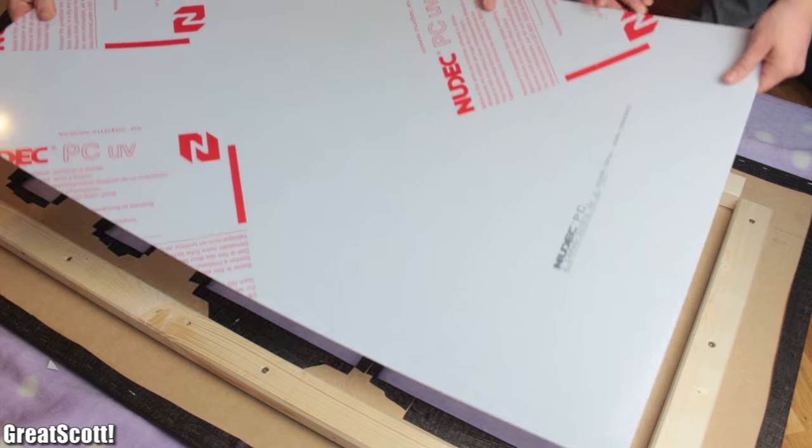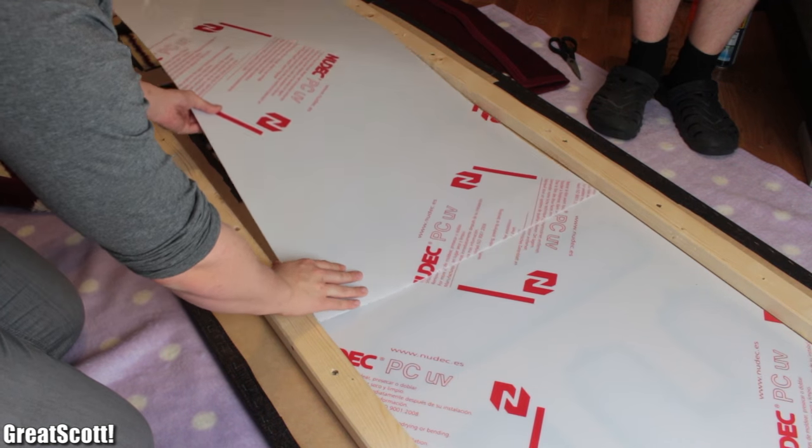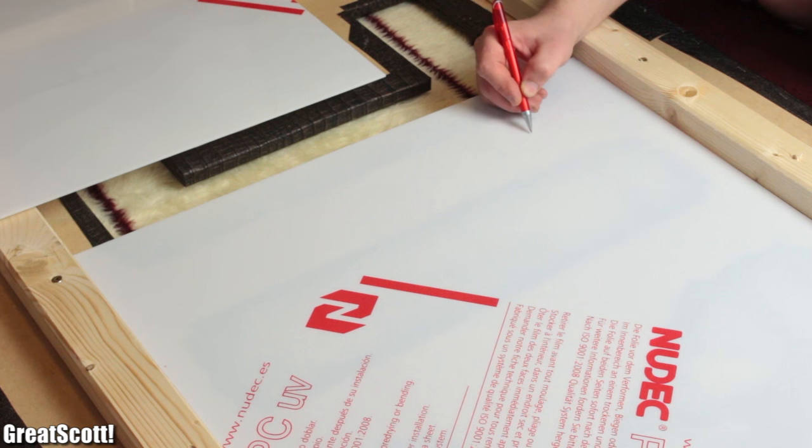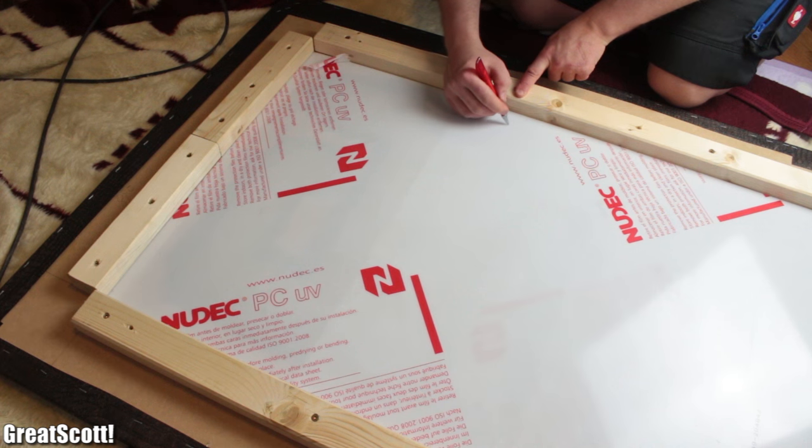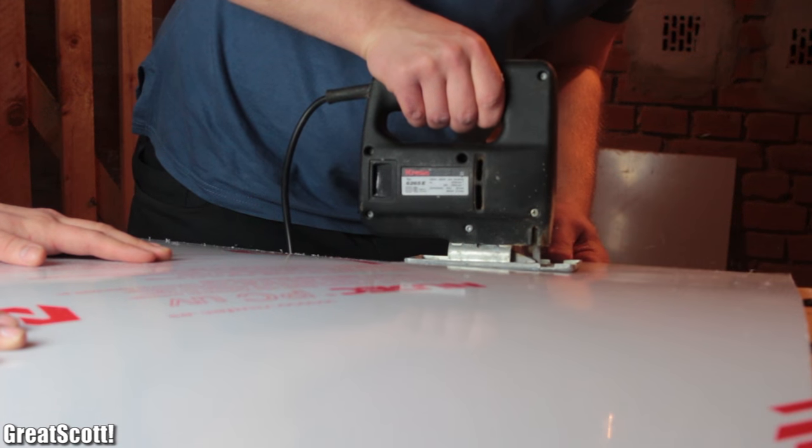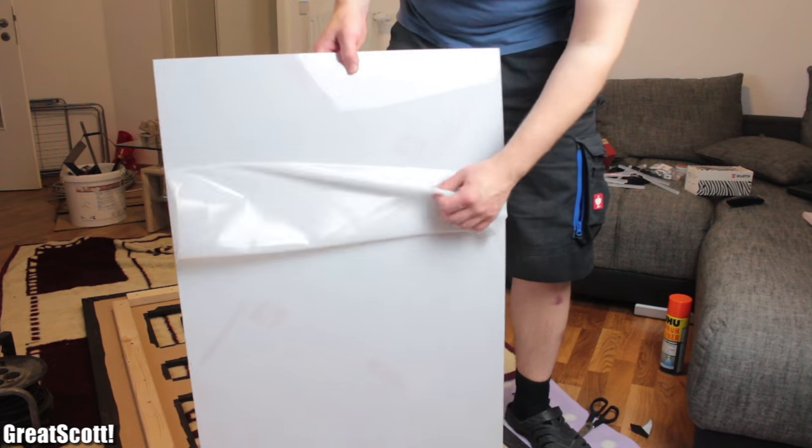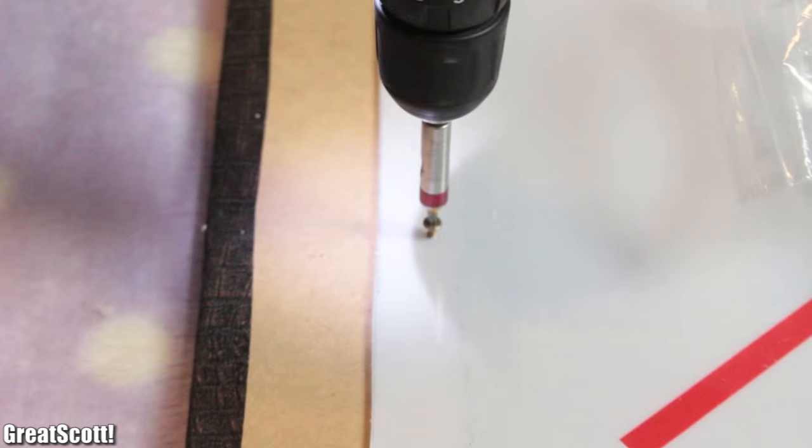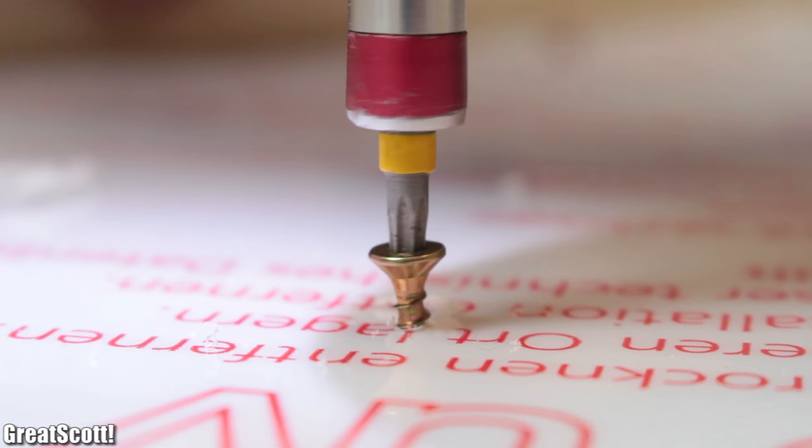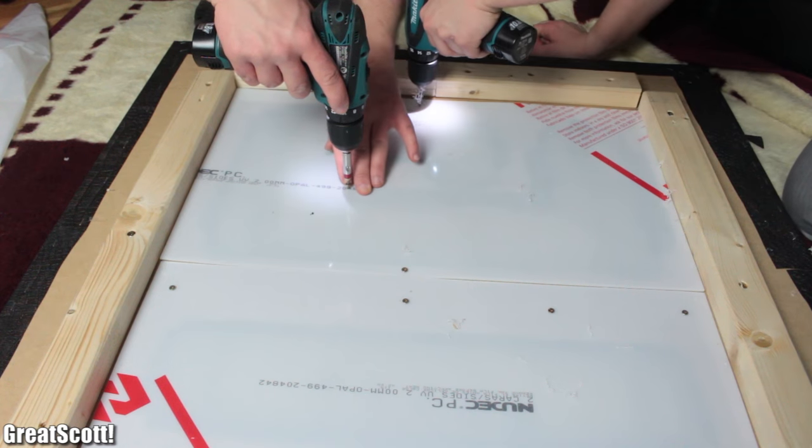Next we laid down the milky white 2 mm thick acrylic pieces and determined where to cut them so that the intersection lines are not visible later on. With the help of the jigsaw we cut the pieces to size, peeled off the protective film, and secured them to the boards with a lot of small wood screws. Just make sure that you do not apply too much pressure onto the glass. It can break quite easily.